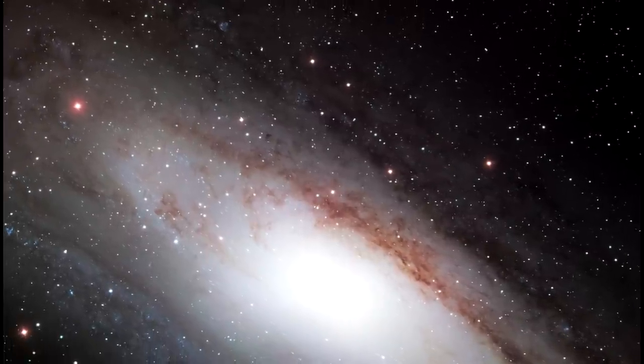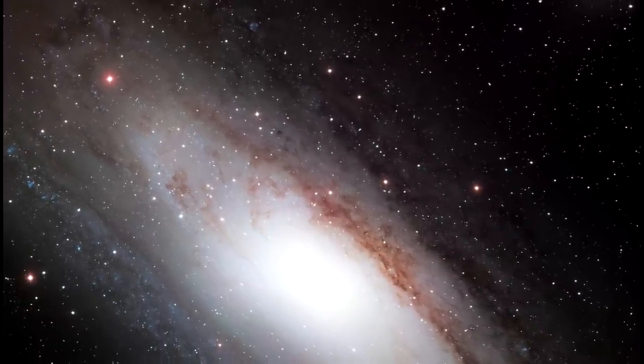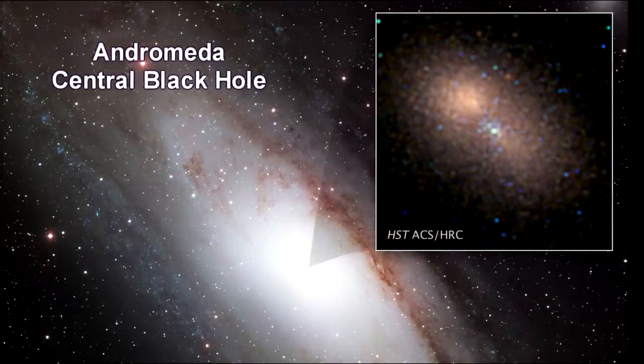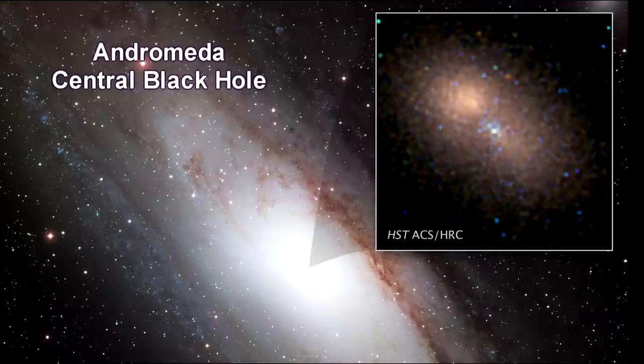Here we see the 100 million solar mass black hole at Andromeda's core. This is the sharpest visible light image ever made of the nucleus of an external galaxy.